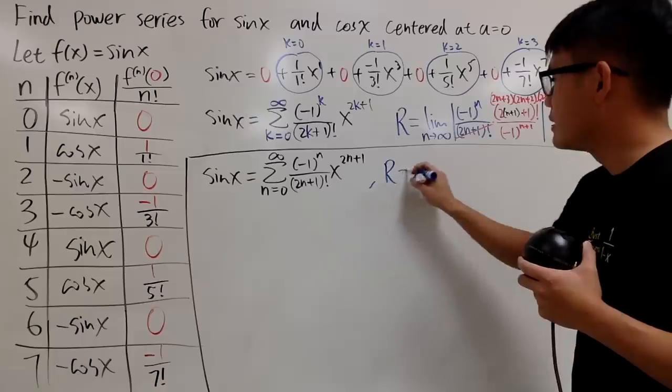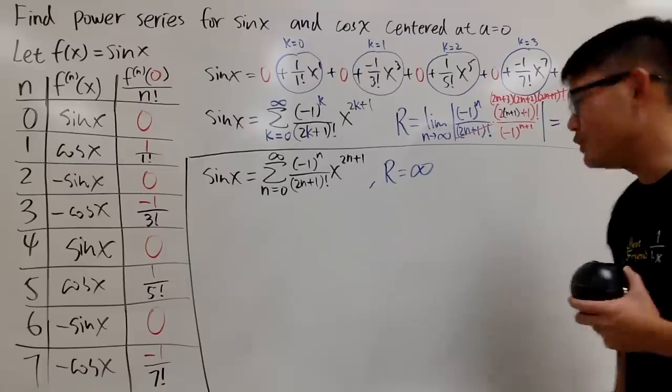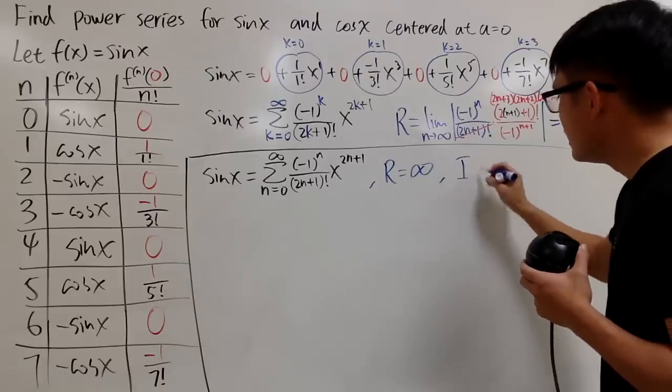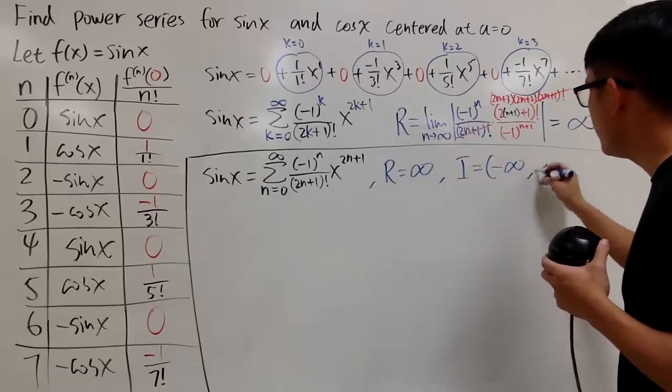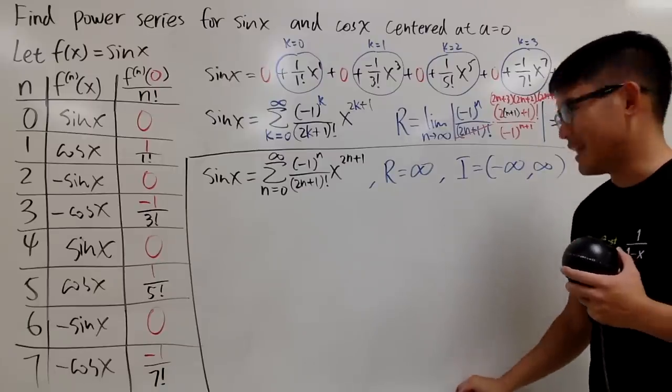So, r is infinity here. And when r is infinity, you should be happy because the interval of convergence is just negative infinity to positive infinity. That's it. This is for sin x.